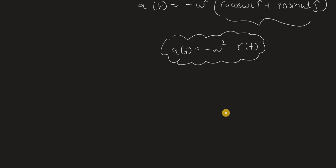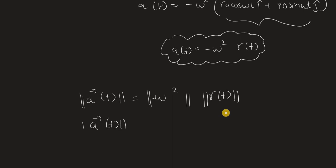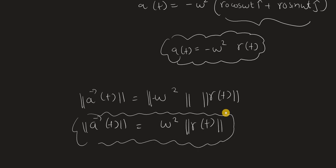To find the magnitude of the acceleration, take the magnitude of both sides: |a(t)| = ω²·|r(t)|. Since -ω² is a constant, its magnitude is just ω², and |r(t)| = r0, the radius. So the magnitude of centripetal acceleration is ω²·r0.